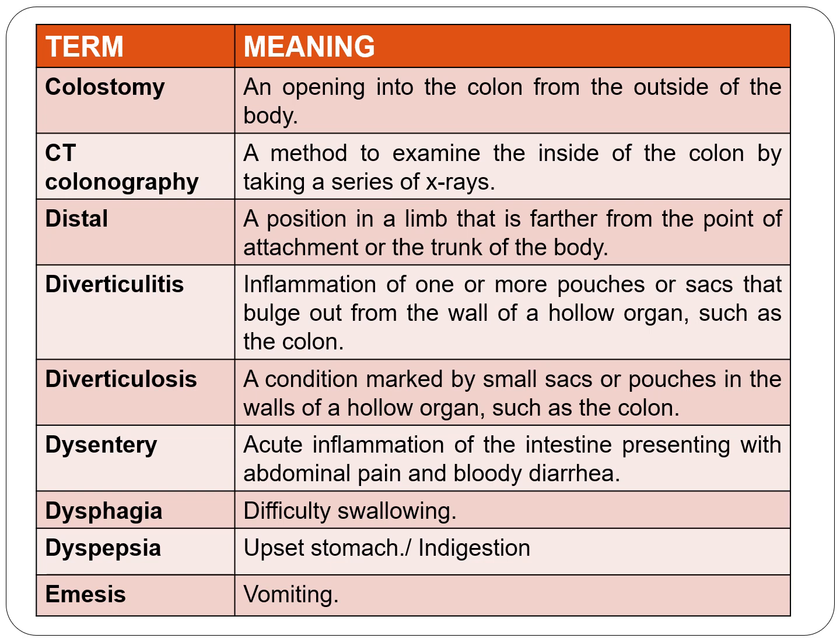The next term is distal — a portion of the limb that is farther from the point of attachment or the trunk of the body. Its opposite is proximal, a position in the limb that is nearer. Next is diverticulitis — 'itis' means inflammation — inflammation of one or more pouches or sacs that bulge out from the wall of hollow organs such as the colon.